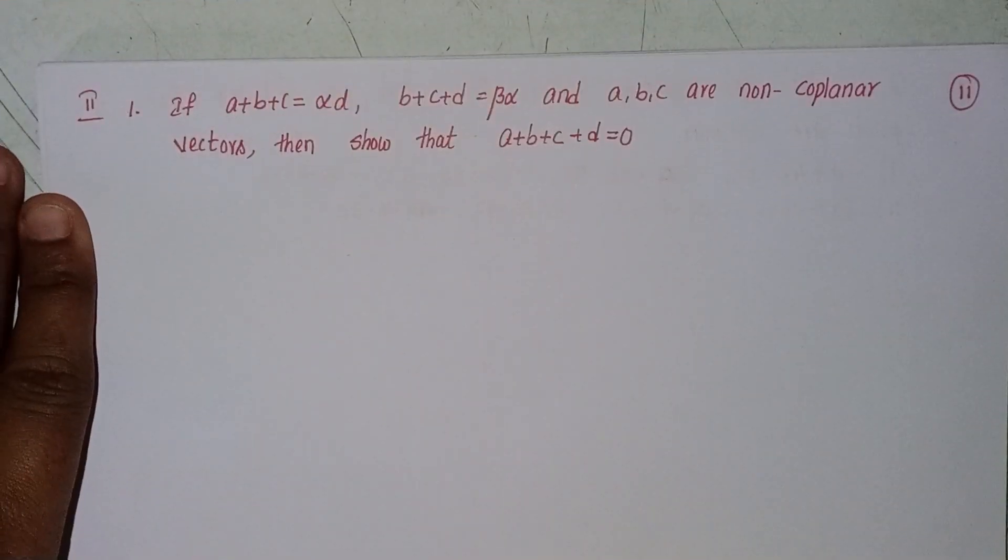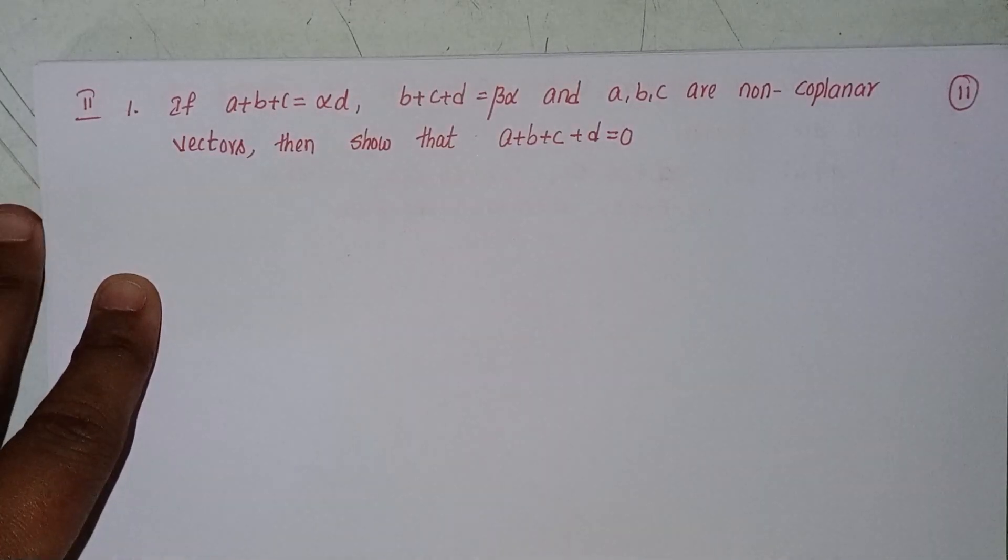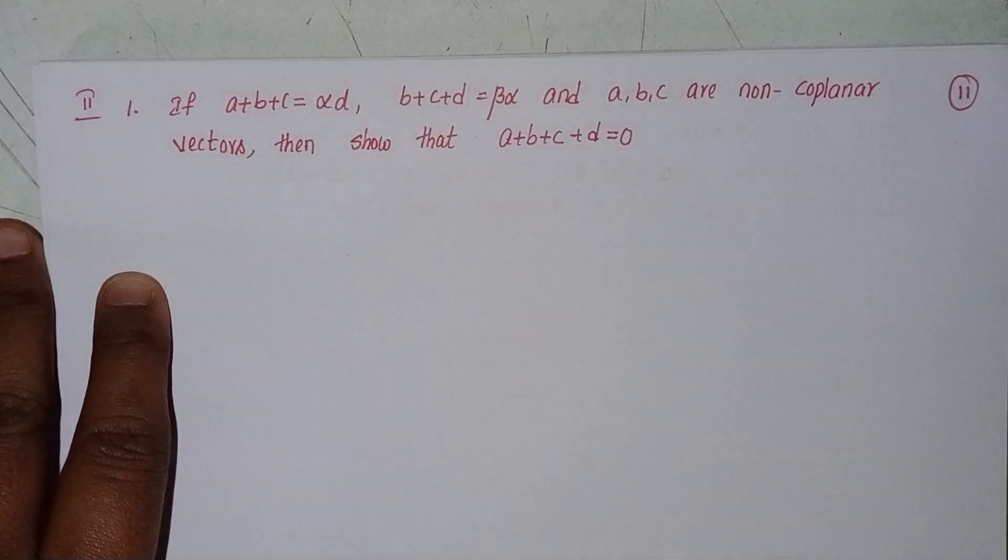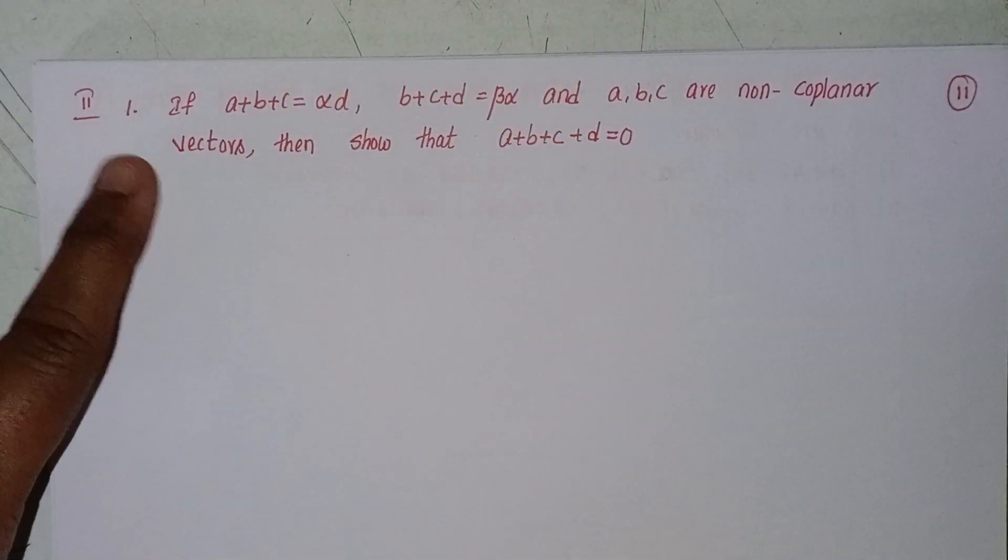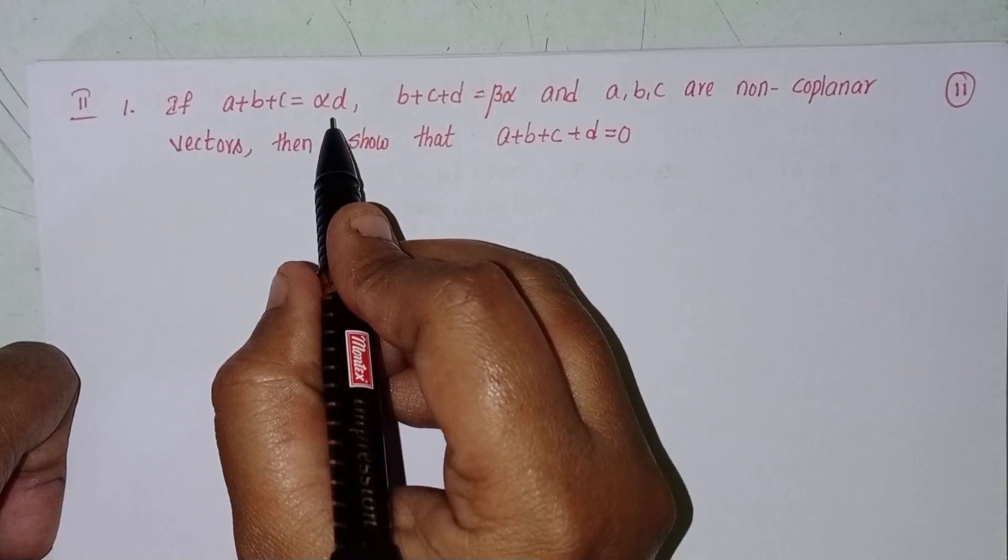Hey guys, this is Shahin, welcome back to our channel. Today we will discuss intermediate first year 1A chapter 4, addition of vectors, exercise 4A, problem 1. If a plus b plus c equal to alpha into d, b plus c plus d equal to beta into a...